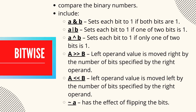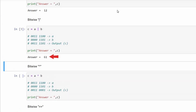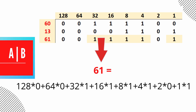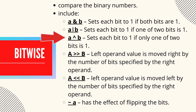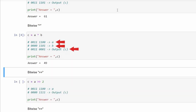Bitwise OR sets each bit to 1 if one of the two bits is 1. Bitwise OR of a and b gives 61, because OR returns 1 if either digit is 1, as shown on the screen. Bitwise XOR sets each bit to 1 if only one of the two bits is 1. We will have 1s in the 5th and 6th positions, and when we calculate the value it gives us 49.